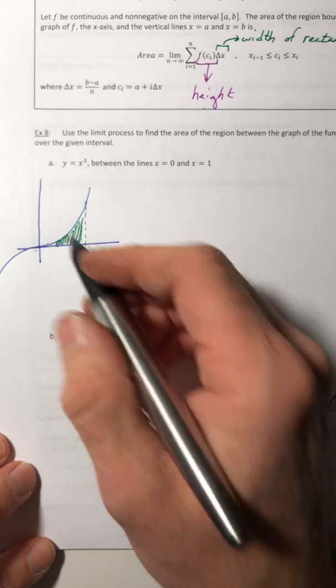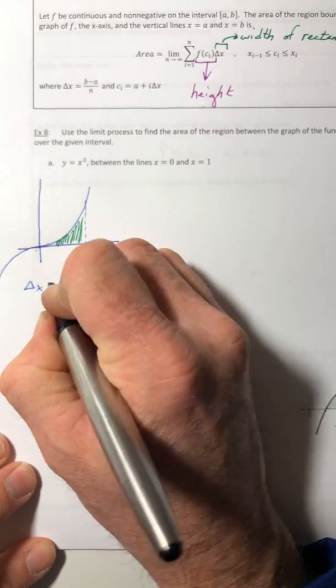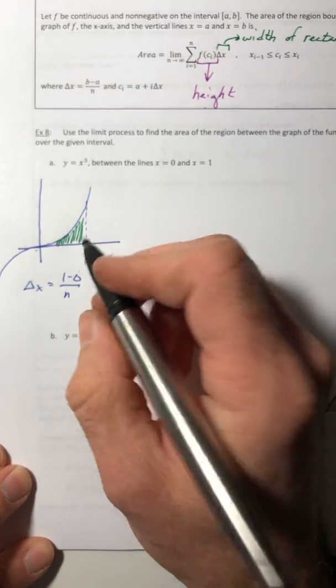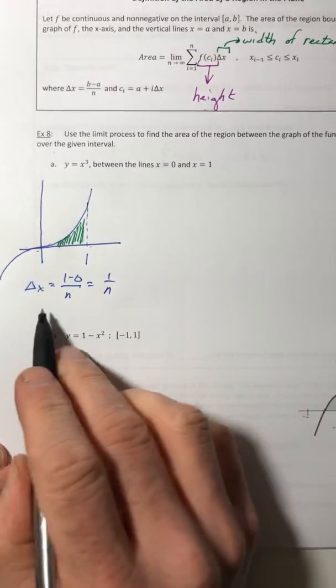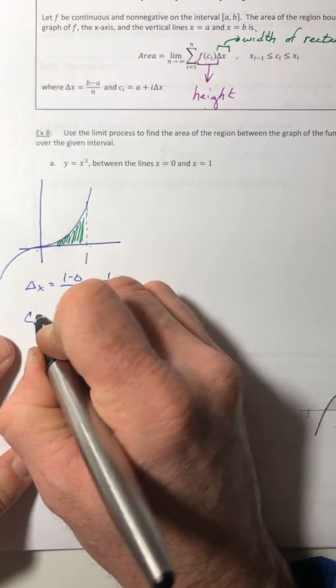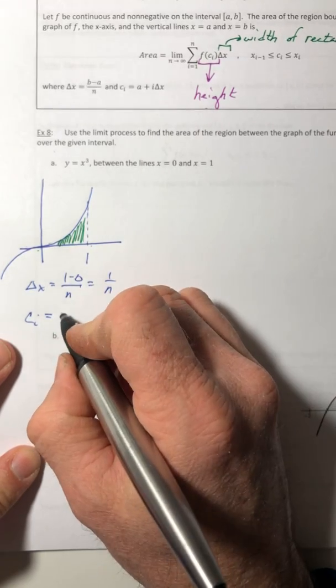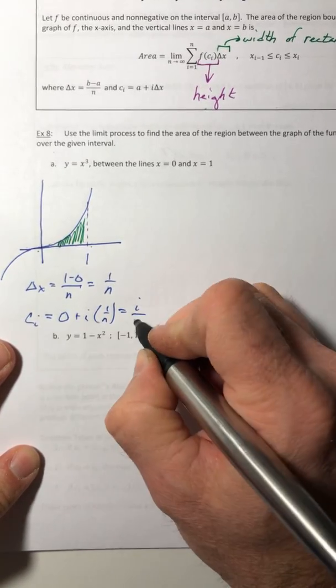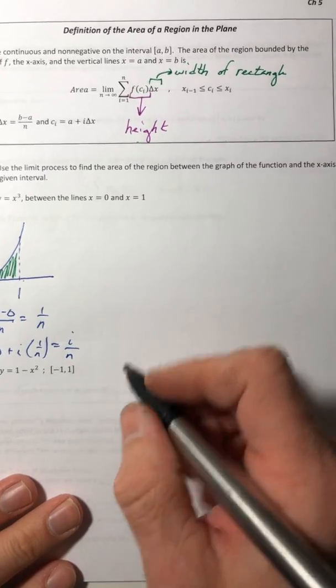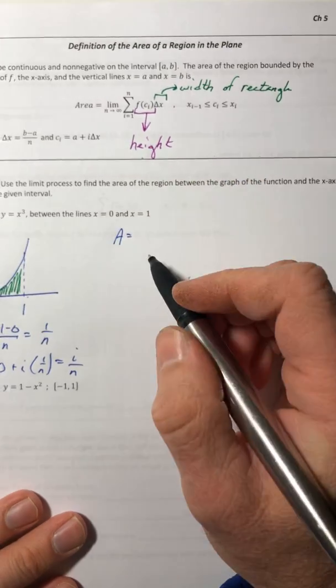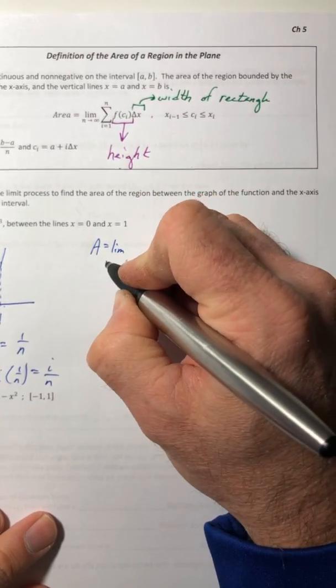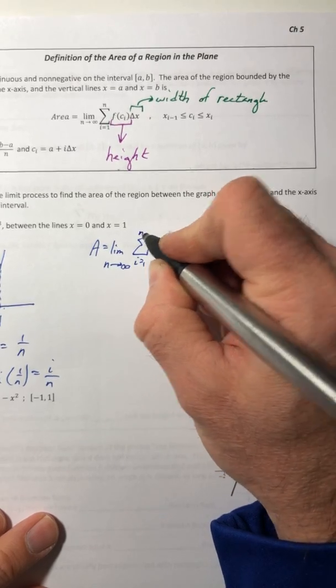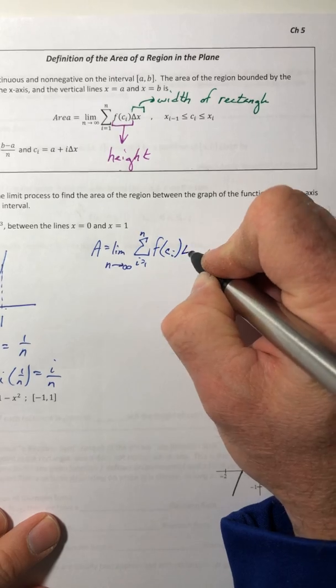So what I do is I go ahead and get my delta x, b minus a over n. So the b is one, a is zero, and n is n. So your delta x comes out to one over n. And then your c sub i, that's a plus i delta x. So zero plus i times one over n, which is going to be i over n. So my area is going to be the limit as n goes to infinity of the sum from i equals one to n of f of c sub i times delta x.